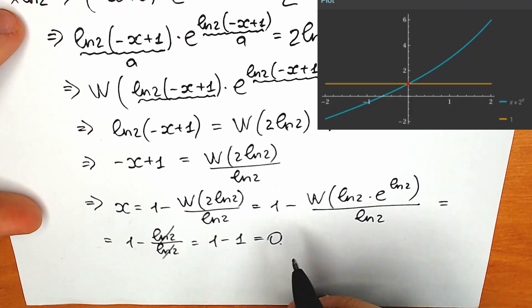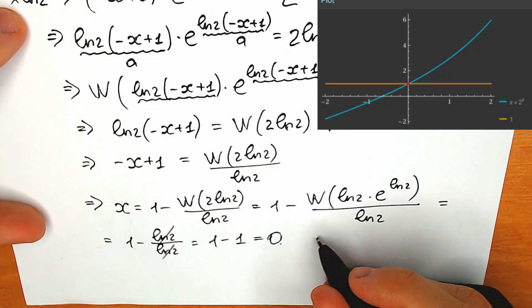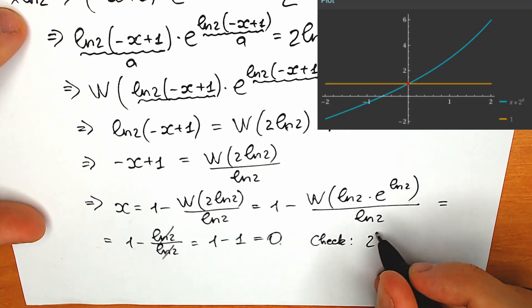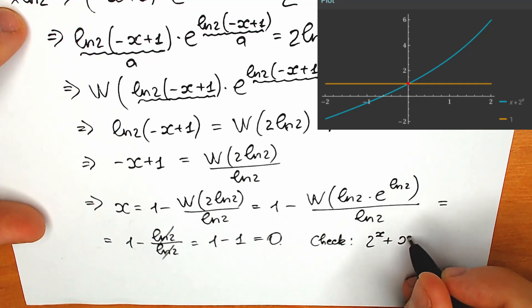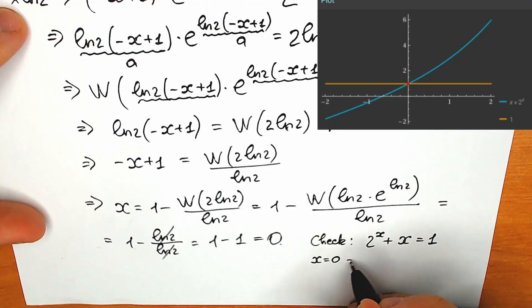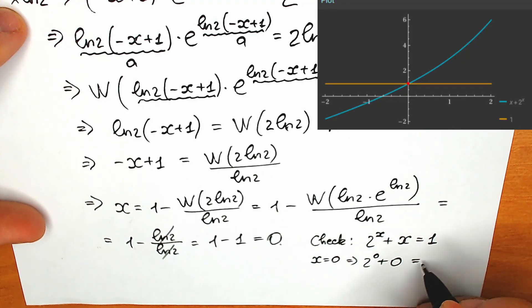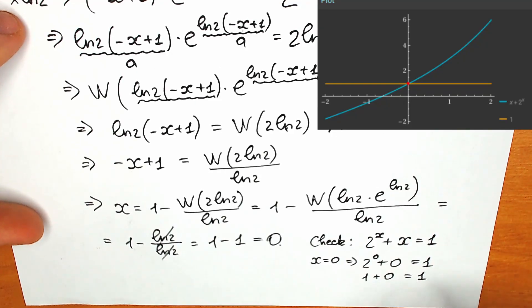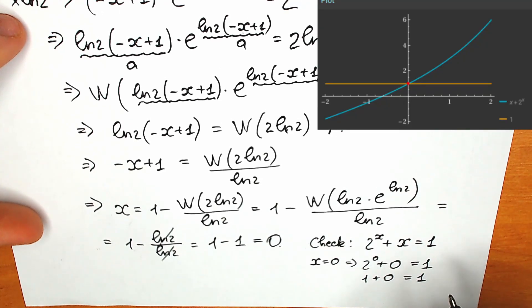Let's verify quickly. We have 2 to the power x plus x equals 1. Checking x equals 0: 2 to the power 0 plus 0 equals 1 plus 0, which equals 1. Everything is correct — our root is absolutely correct.